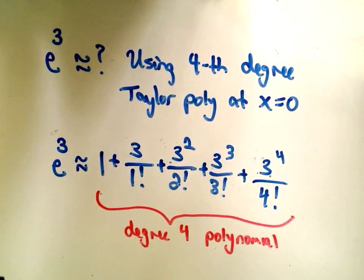I have to change it to approximately equal because I actually left off infinitely many terms. But this would be an approximation for e to the third using your fourth degree Taylor polynomial.